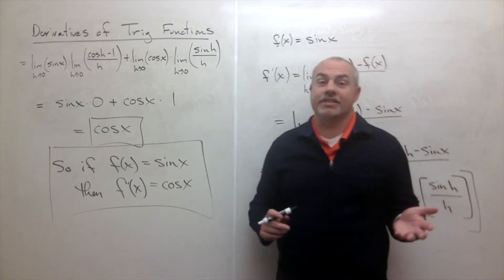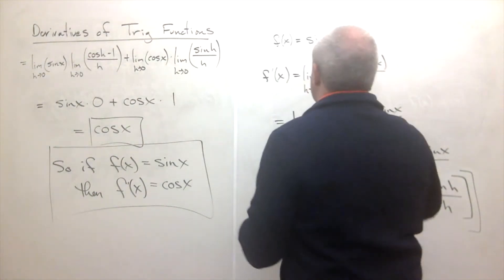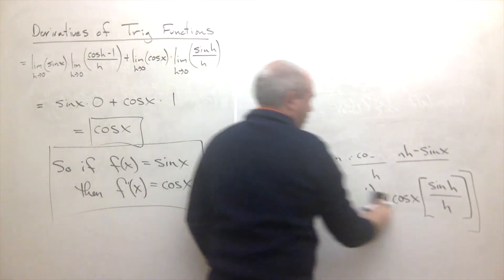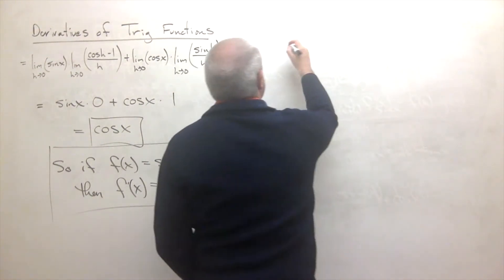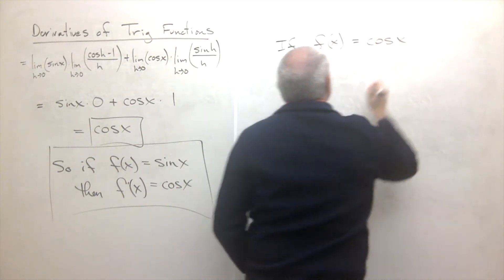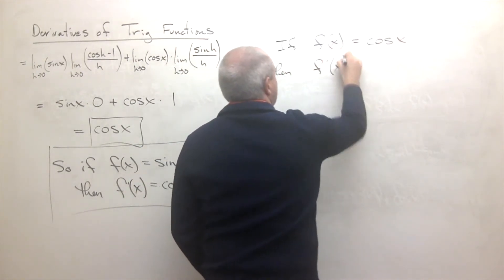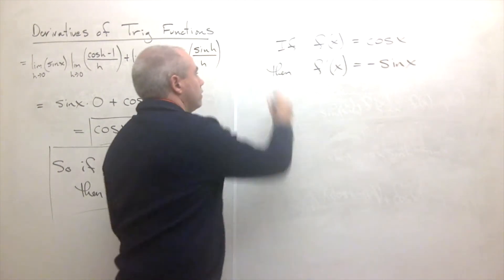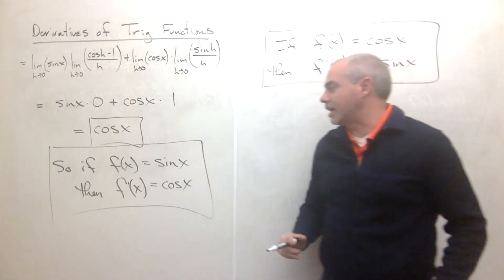The second derivative is very similar in proof — I'm not going to go through the whole thing again. But if f of x is equal to cosine of x, then f prime of x is equal to negative sine of x.